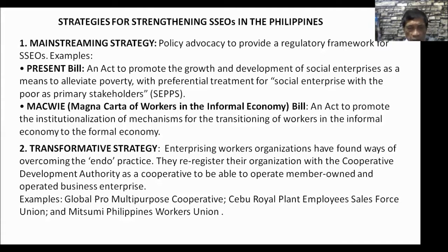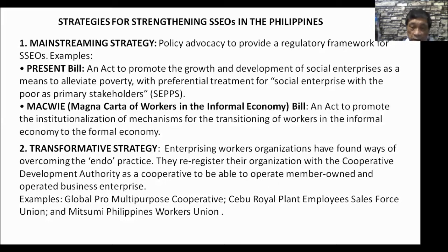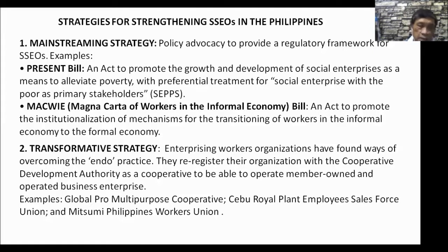The second strategy is the transformative strategy, where organizations previously focused only on their members now transform and organize their own income-generating activity. Examples include the Global Pro Multi-Purpose Cooperative, Cebu Royal Plant Employees Salesforce Union, and Mitsumi Philippines Workers Union. Previously, unions were only working toward the advancement of labor rights, but because of poverty they have engaged in economic enterprise. This transformation is being promoted by civil society organizations, with government support.